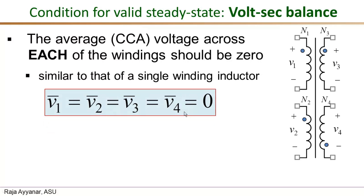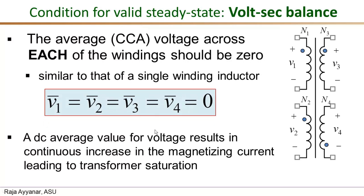Why is this requirement necessary? Just as with an inductor, if there is a DC average value of the voltage across the transformer winding, it results in a continuous increase in the magnetizing current until the transformer core actually saturates and it is no longer a transformer.